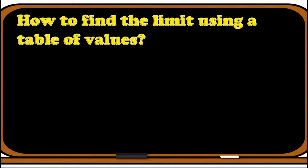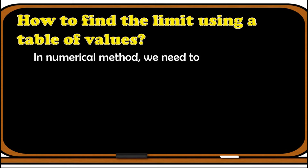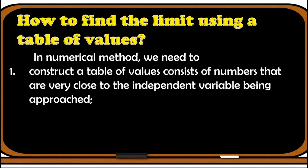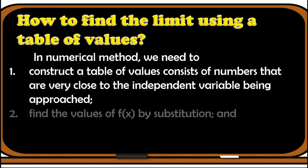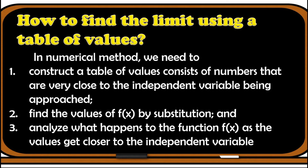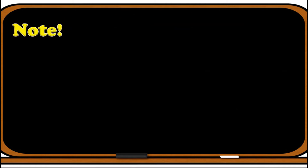So how do we find the limit using a table of values? In numerical method, we need to follow certain procedures. First, we need to construct a table of values consisting of numbers that are very close to the independent variable being approached. Second, we need to find the values of f(x) by substitution. And third, analyze what happens to the function or f(x) as the values get closer to the independent variable. Take note of the following.